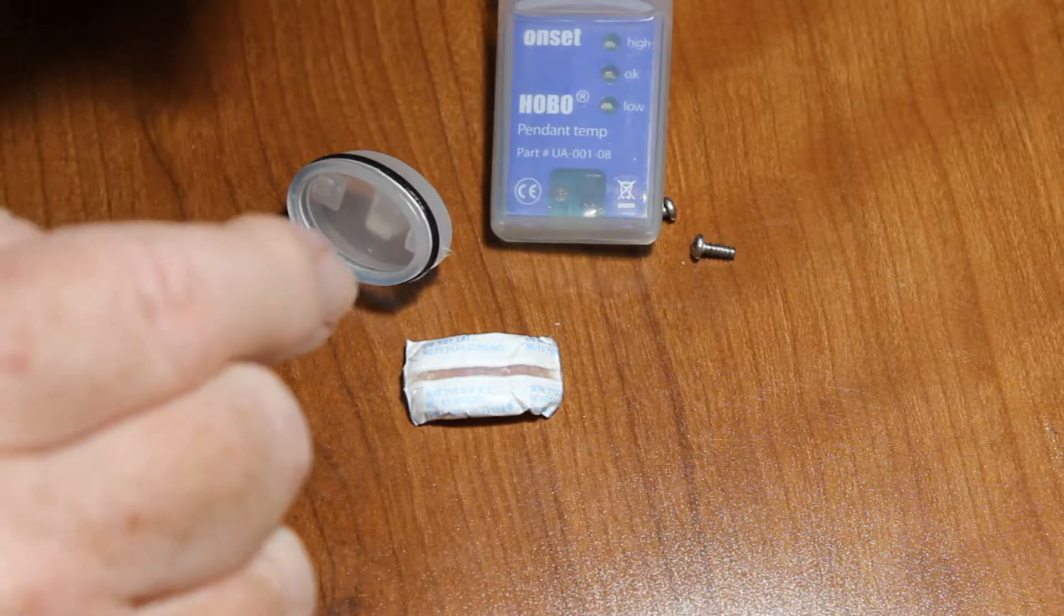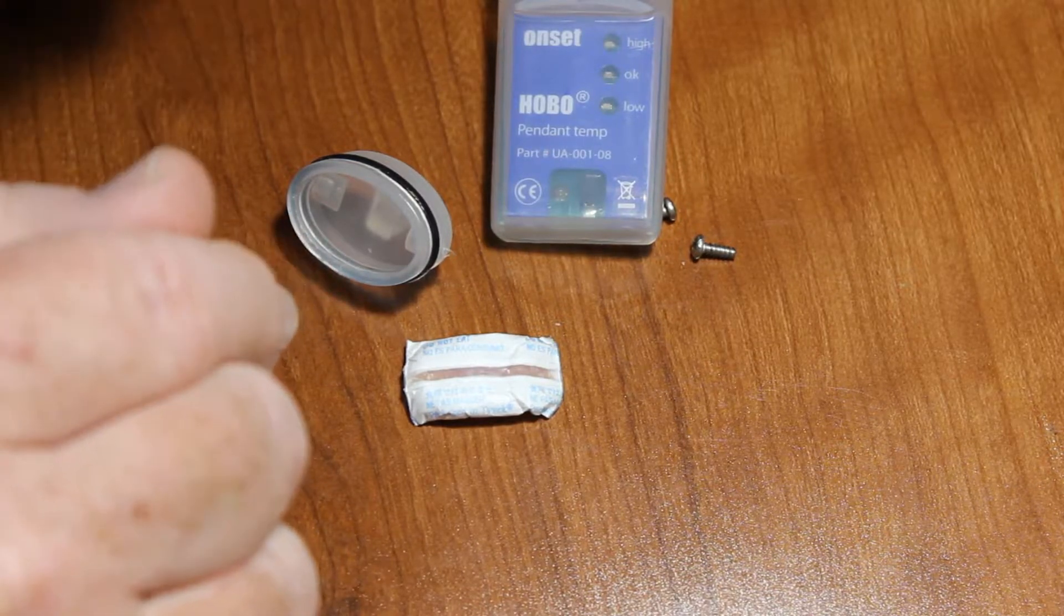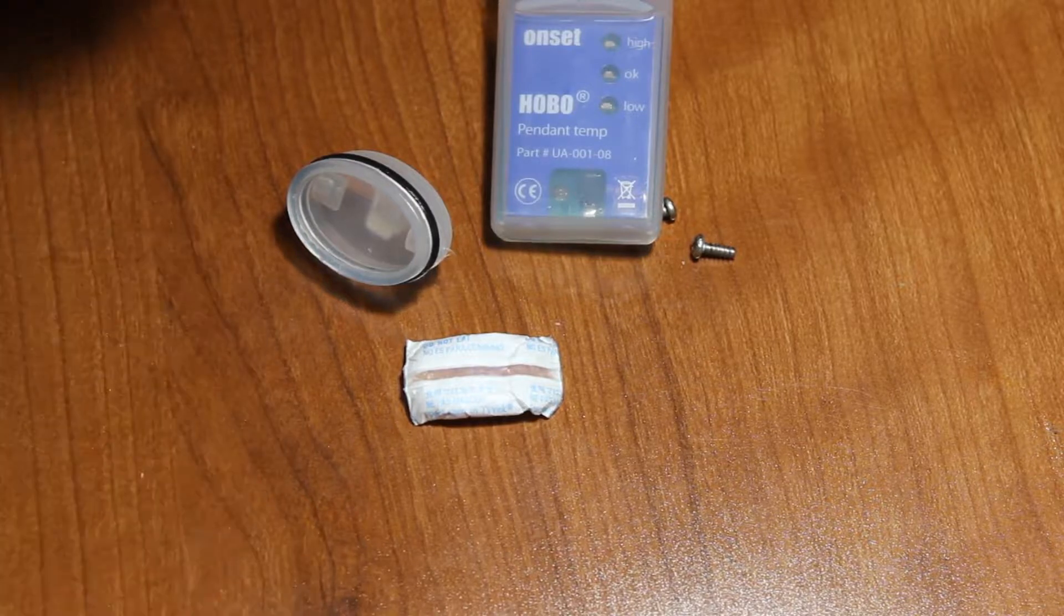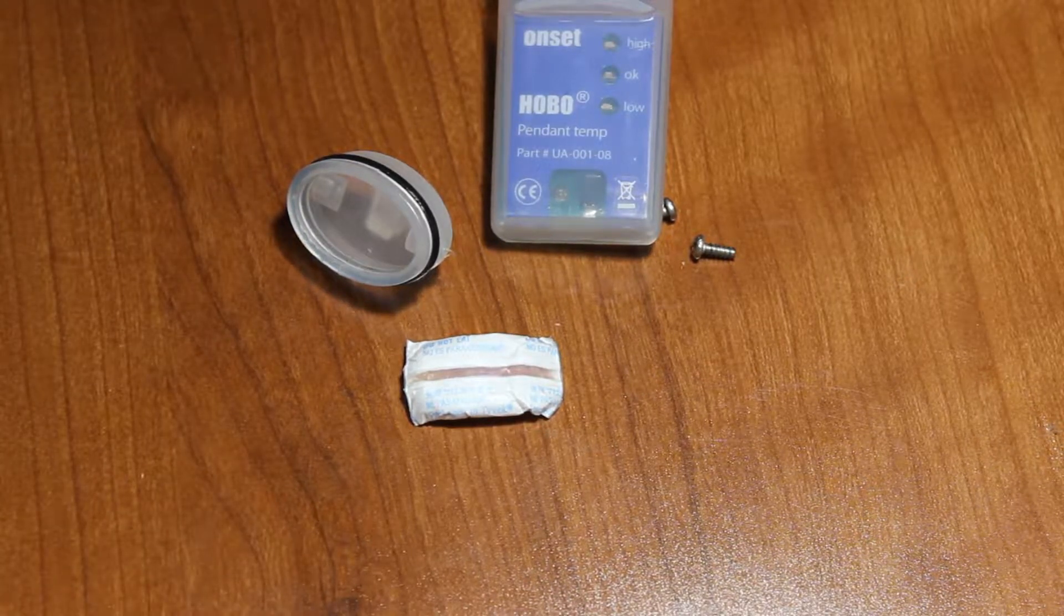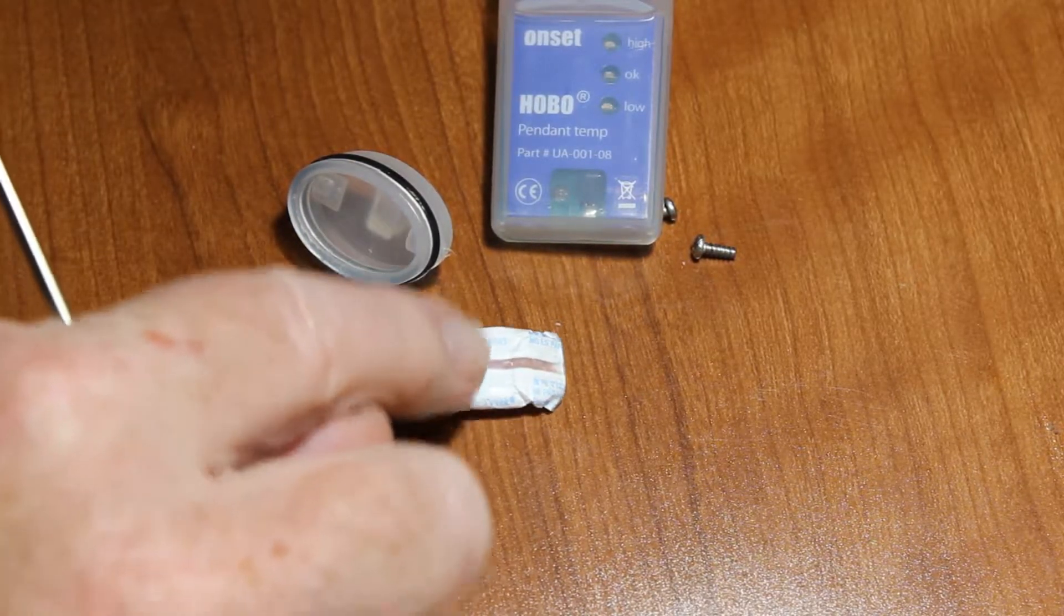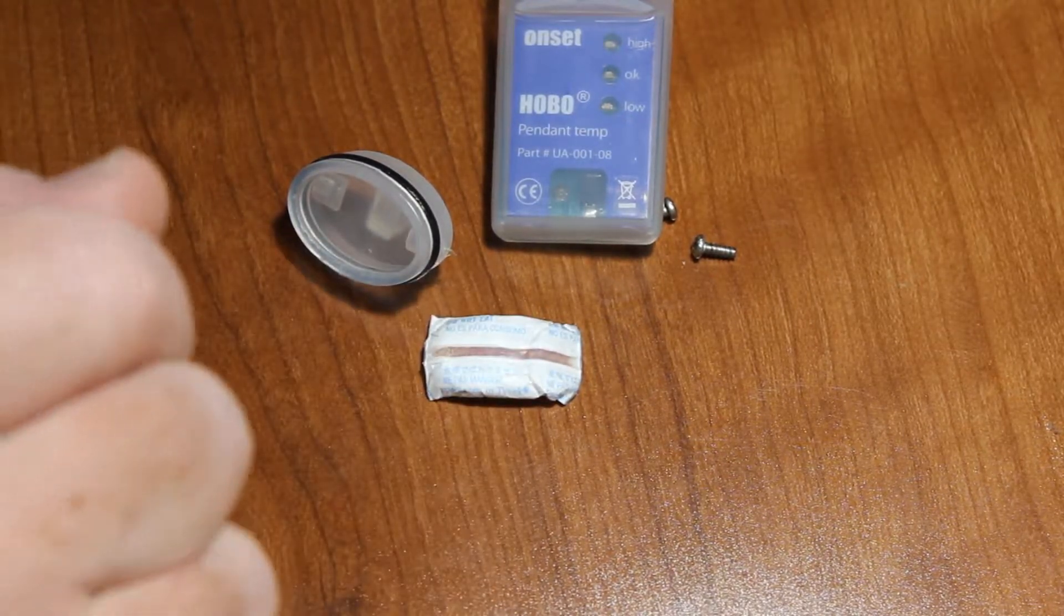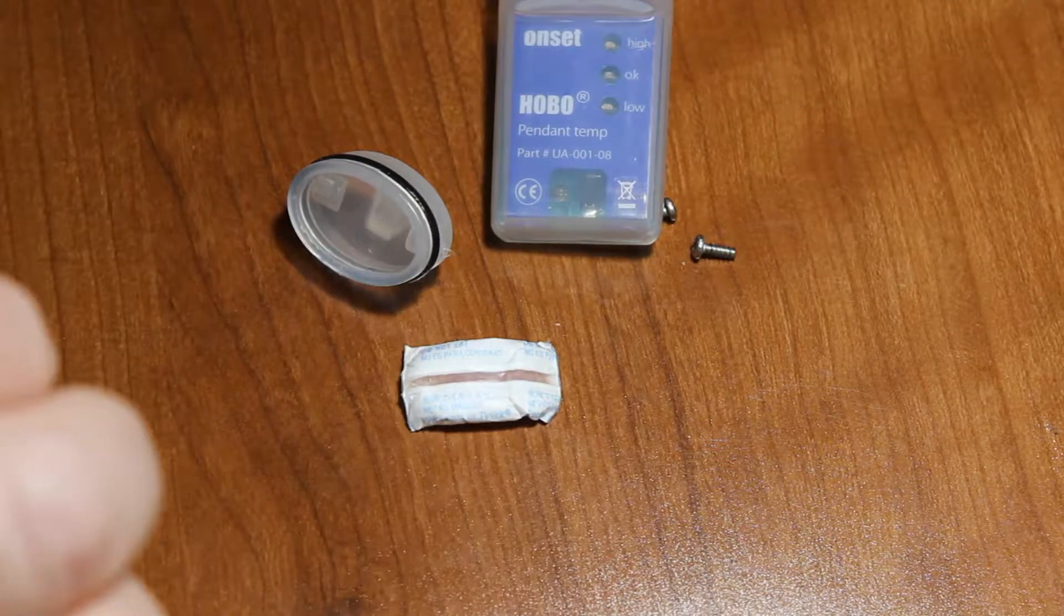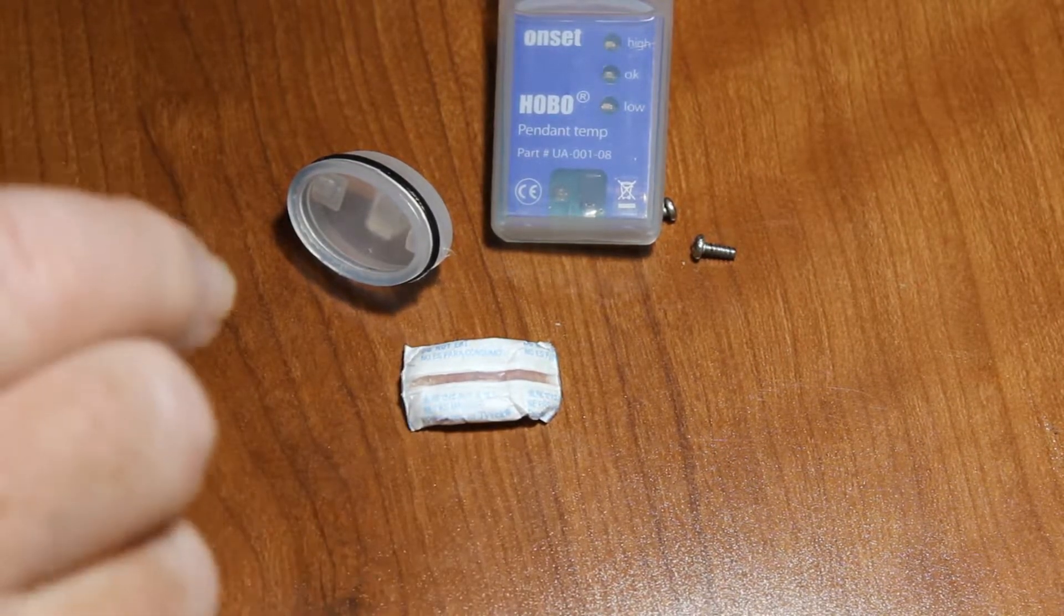You can recondition this by putting it in an oven and setting that oven to a fairly low temperature, something like maybe 30, 35 degrees C or 100 degrees Fahrenheit. Let it cook in there and it will dry out the silica gel in there and it will turn blue again. Or you can purchase new desiccants from Onset.